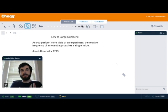The law of large numbers says that as you perform more trials of an experiment, the relative frequency of an event approaches a single value. This is a super important idea in statistics because it guarantees that we'll get a long-term result in a series of successive trials in an experiment.